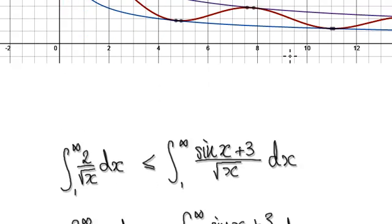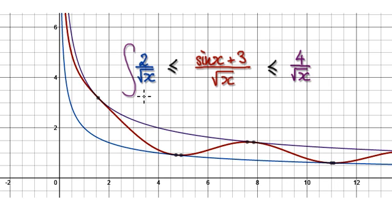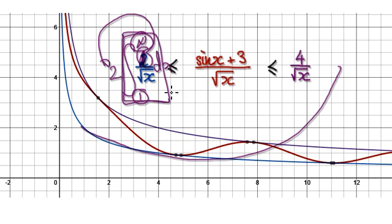You should realize that when you take the integral of this from 1 to infinity dx, the 2 can be moved out because it's a constant, giving you the integral of 1 over square root of x. The integral of 1 over square root of x from 1 to infinity will diverge — you should know this because we've seen it many times.